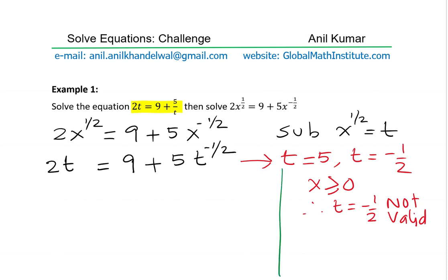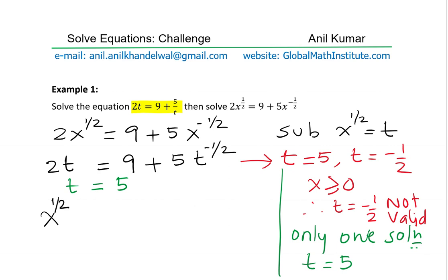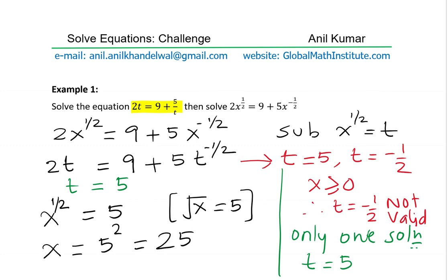We have only one solution: t = 5. That means x^(1/2) — that is, the square root of x — equals 5. So x = 5² = 25. Our answer is x = 25.